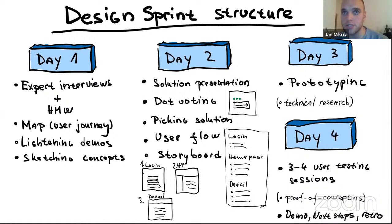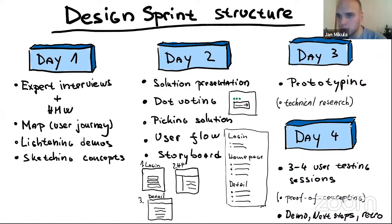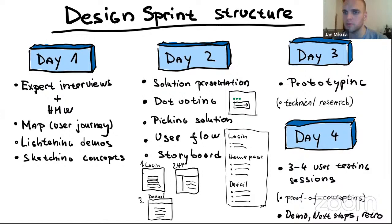After the user flow, you do storyboarding — quickly sketching how each screen looks, reusing as much as possible from the concepts. That's the end of day two. Day three is about prototyping — the designer uses Figma or Adobe XD to prepare what was discussed. Day four is user testing, usually three to four sessions, followed by a demo to the client or stakeholder, a discussion of next steps, and a short retrospective. If there's a full-stack developer, days three and four are a good time for technical research and proof of concept work.